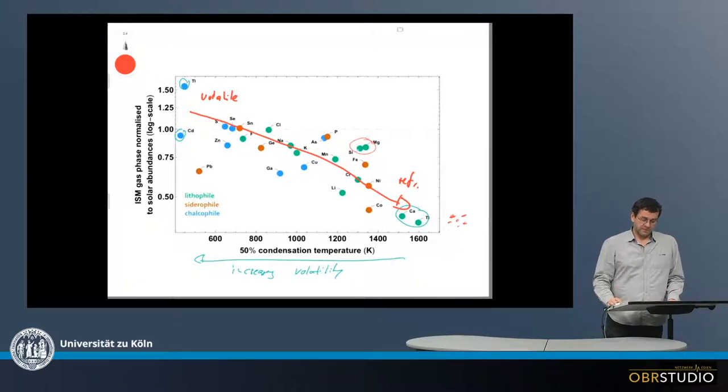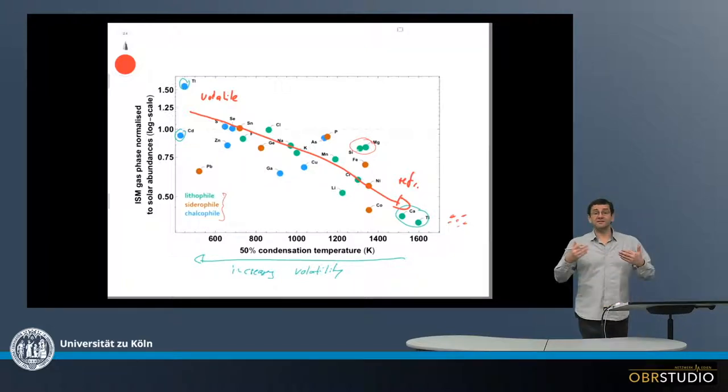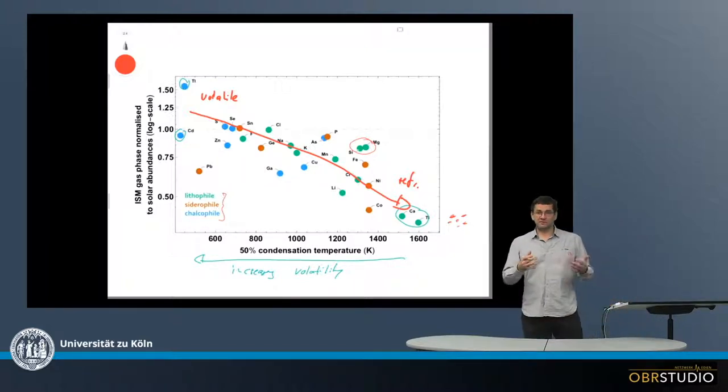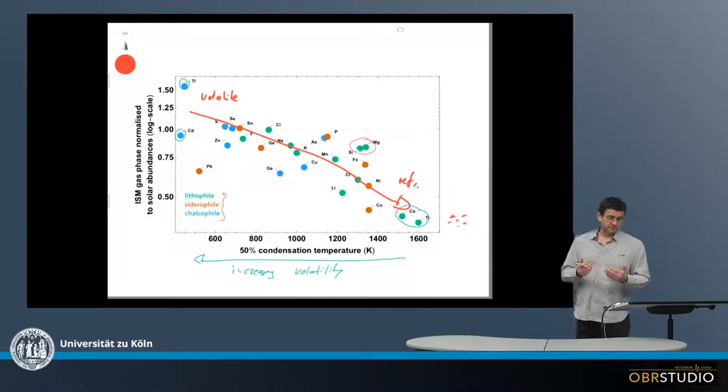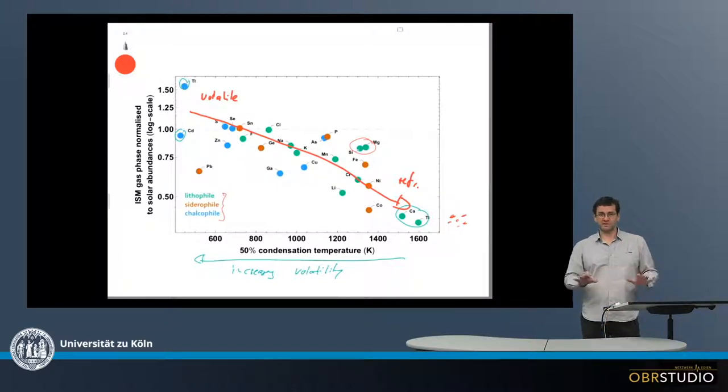Now importantly, there is no difference, or it doesn't make any difference, whether the element has a lithophile, siderophile, or chalcophile character. This is shown here, indicated by different colors. So independent of this geochemical characteristic, all the elements are depleted. So it's not that this depletion pattern is related to whether it's lithophile, siderophile, or so on. It's just volatility controlled. That's all there is.